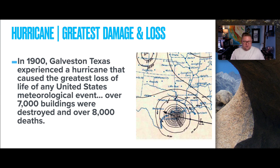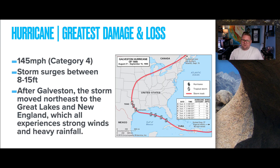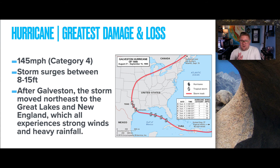What's interesting about the Galveston storm is how far it continued to travel. Generally, hurricanes lose energy when they hit land, but this one lasted quite a bit longer. Considered a Category 4 on average, with max winds of about 145 mph and storm surges of 8 to 15 feet. After making landfall in Galveston, the storm continued northeast — deflected to the right — all the way to the Great Lakes and New England, bringing extreme wind and extensive rainfall.